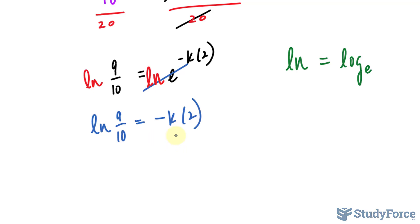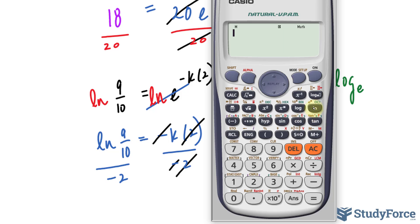Then, dividing both sides by negative 2, watch closely. This negative and that negative cancel, and so do these two 2s. So let's use our calculator. We have ln 9 over 10 divided by negative 2. We get a value that's roughly 0.053.